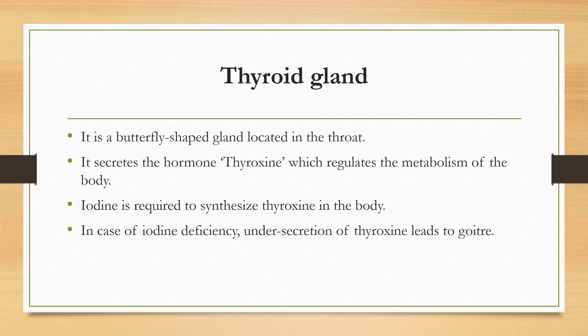Iodine is necessary for making the thyroxine hormone by the thyroid gland. Deficiency of iodine in the diet causes a deficiency of thyroxine hormone, which produces less thyroxine and causes a disease known as goiter. The main symptom of goiter is that the neck becomes swollen due to enlargement of the thyroid gland. People are therefore advised to use iodized salt. Iodized salt contains appropriate amounts of iodine compounds like potassium iodide, providing all the iodine needed by the thyroid gland to make sufficient thyroxine, thus preventing goiter.